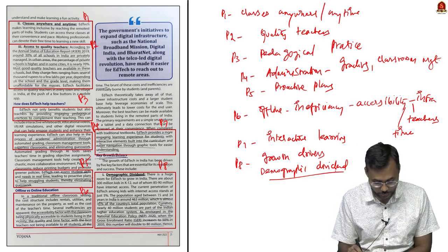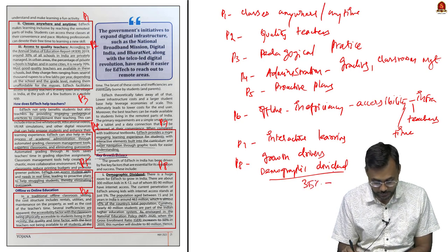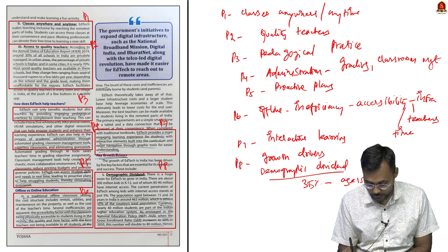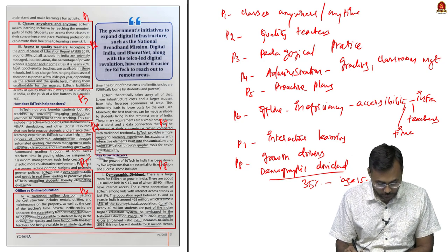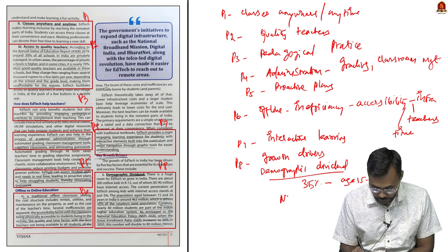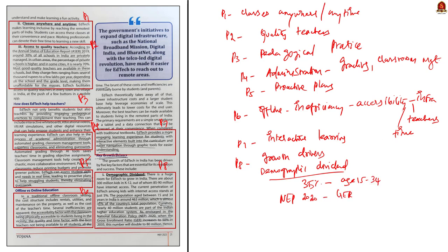Paragraph 8 speaks about the growth drivers — why ed-tech is feasible. The first is demographic dividend: around 35 percent of India's population is within the age bracket of 15 to 34, which clearly shows the potential of education technology, as this is the age group eager to learn new things.